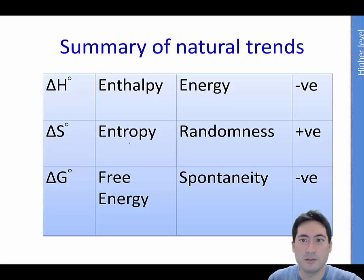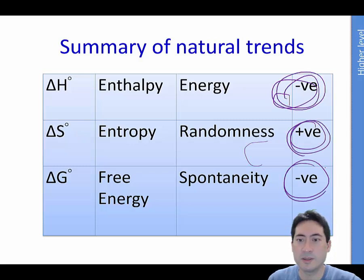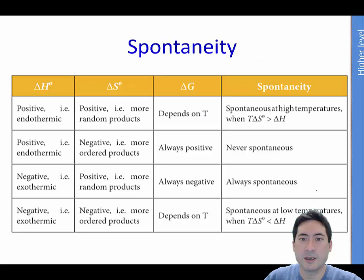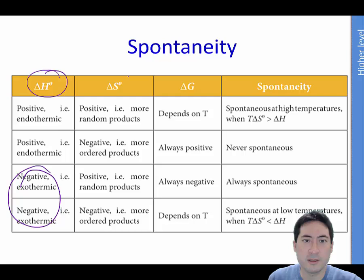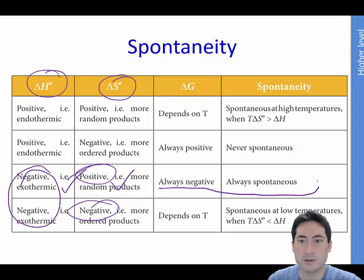Here's a summary here. You want delta H to be negative. You want entropy to be positive. You want delta G to be negative. So we can have a look at various reactions up here. If delta H is negative, that's a good thing. But if the delta S is positive, they're both the good things. So that's always going to work, always going to be spontaneous and always going to be negative.